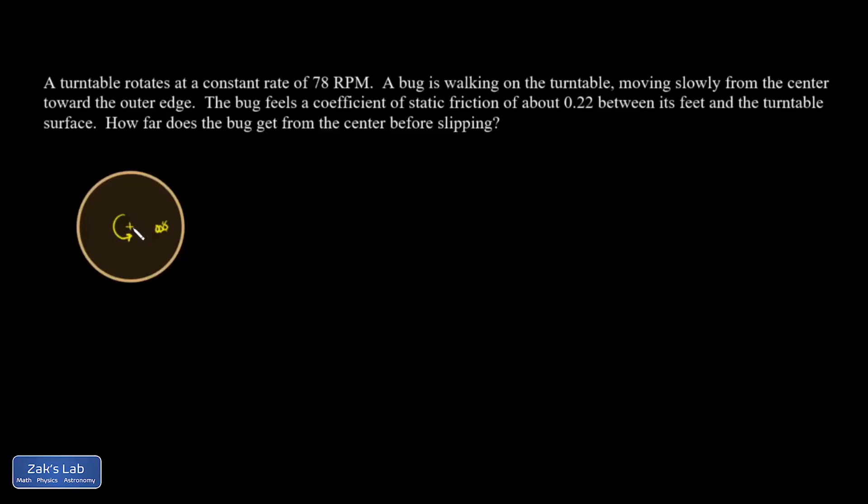In this problem, a bug is walking from the center out on a turntable that's moving at 78 rotations per minute. The farther the bug gets from the center of curvature, the greater the centripetal acceleration that's required to keep it on a circular path. What's supplying the force to cause the centripetal acceleration is a static friction force. So eventually, the bug gets to some radius r where the maximum static friction force is exceeded, and the bug will break loose and slide off the turntable.